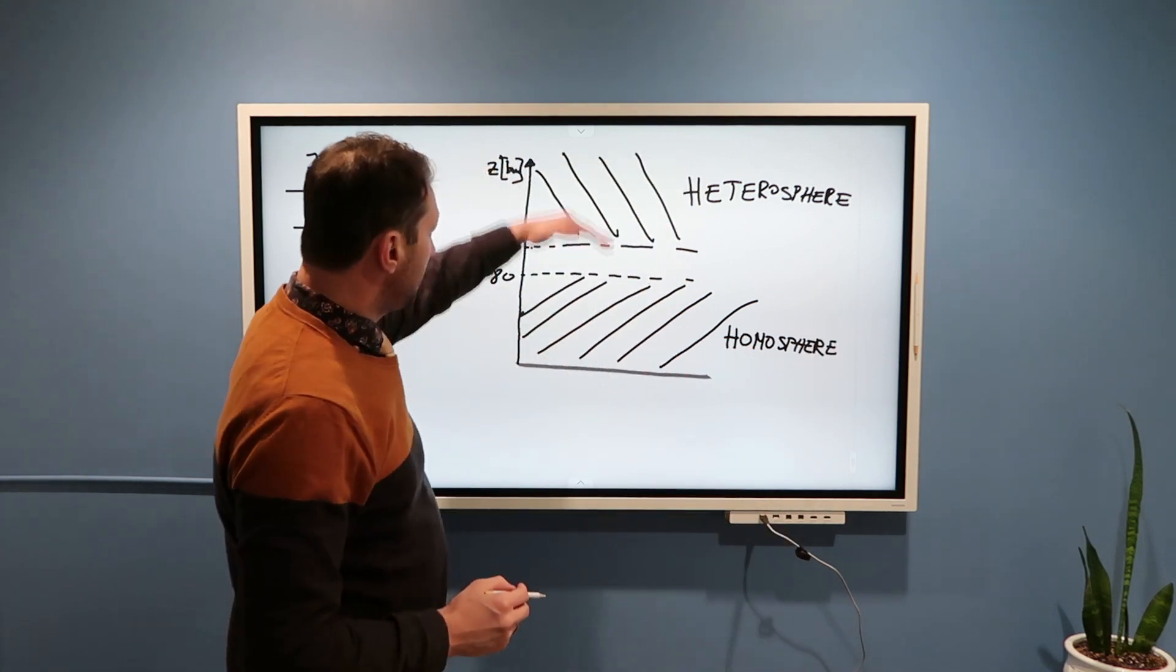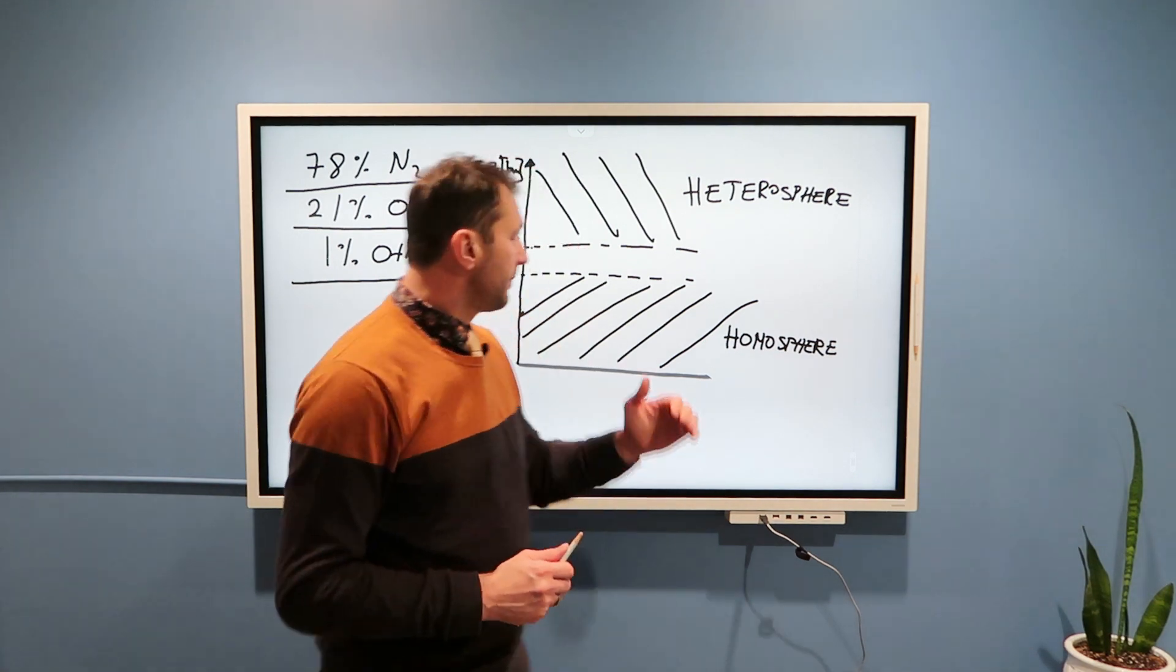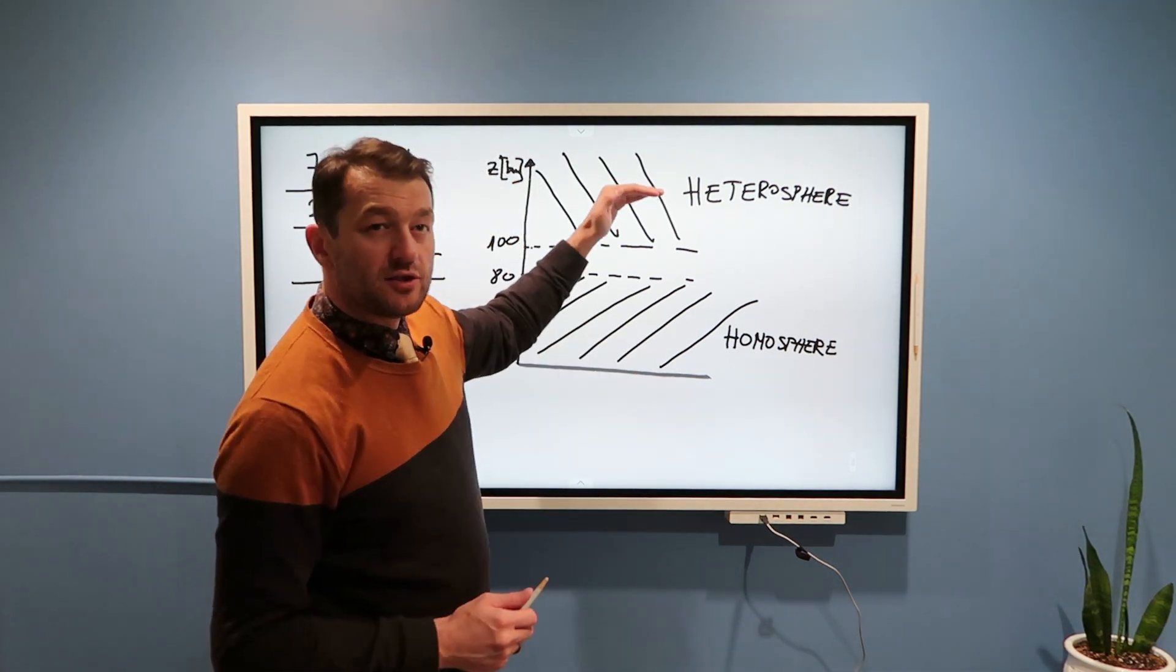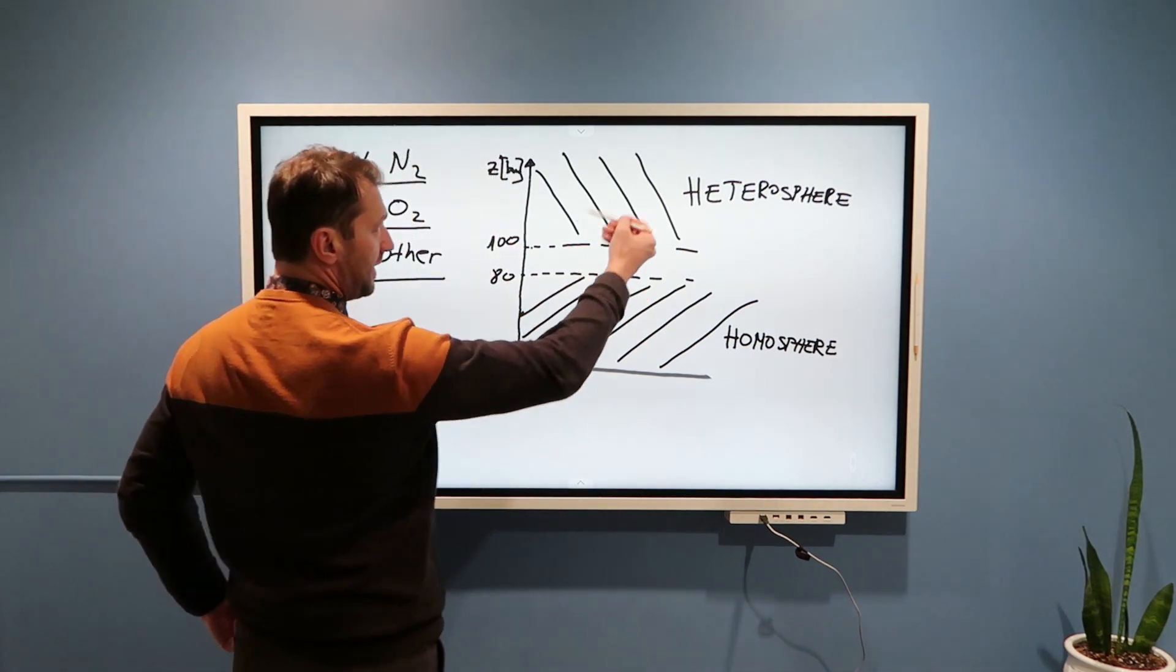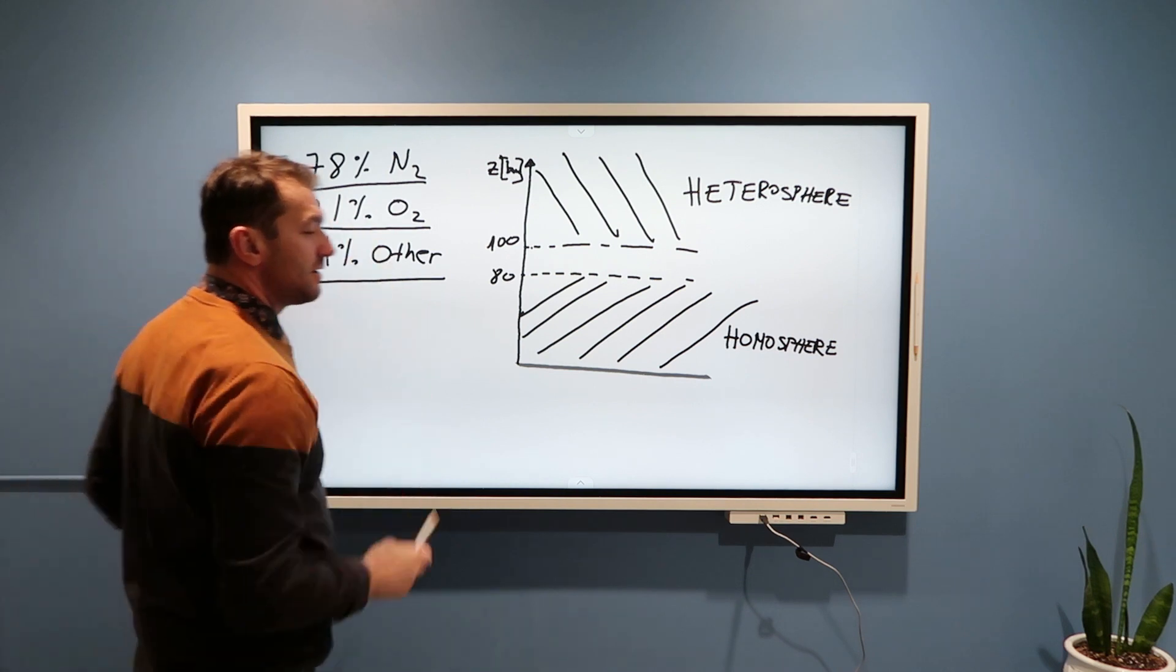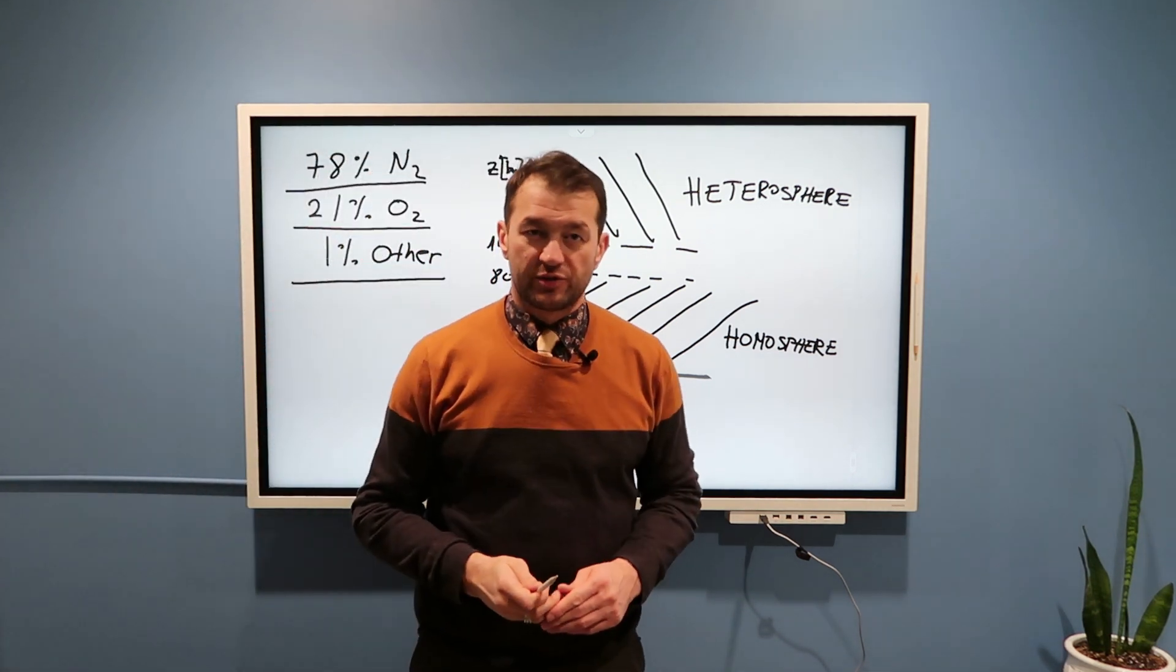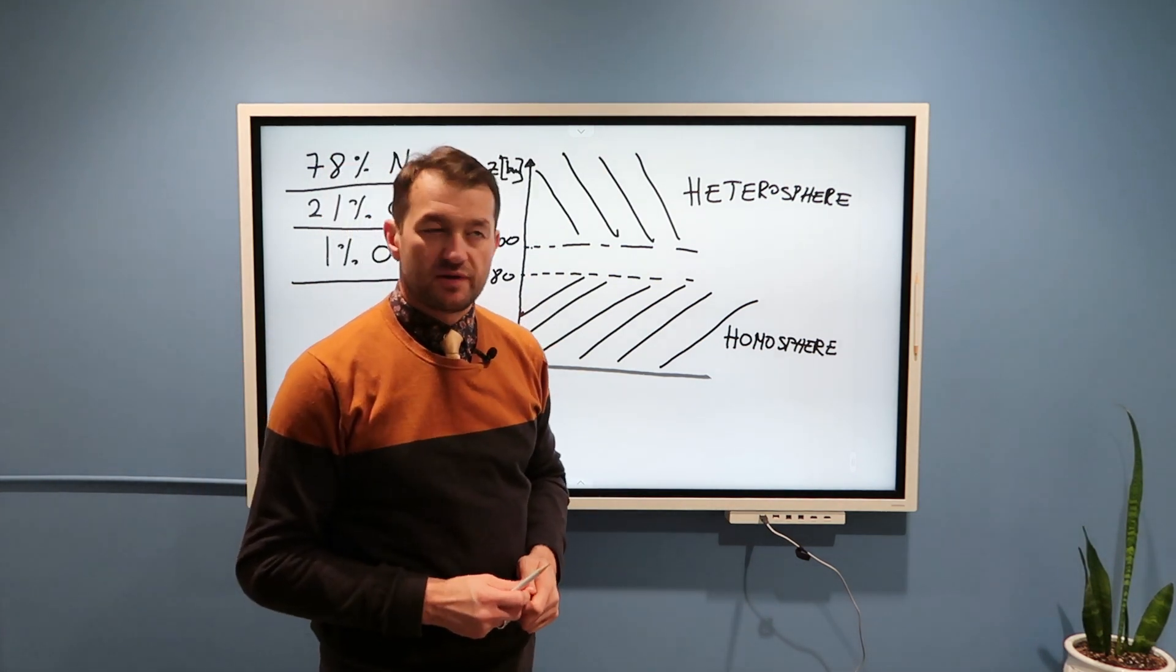Because heterosphere is now further away from the surface of the Earth, lighter elements dominate over heavier elements. For example, at these altitudes, nitrogen is rarely observed. And further we go up, less and less nitrogen we get.